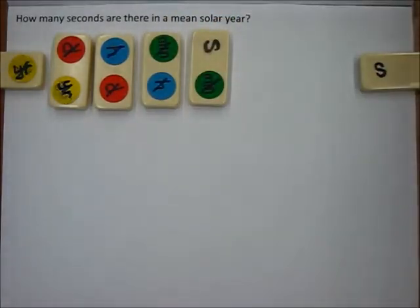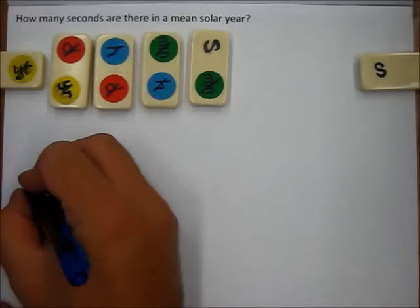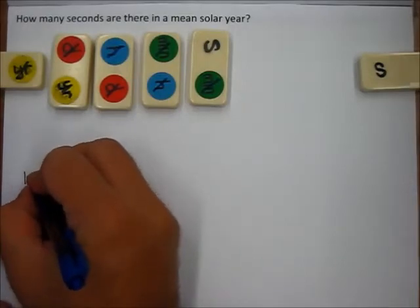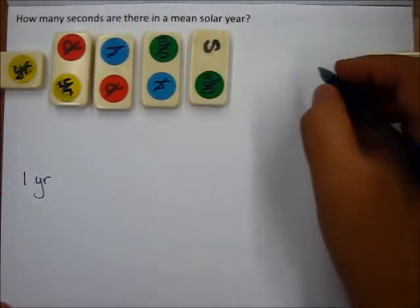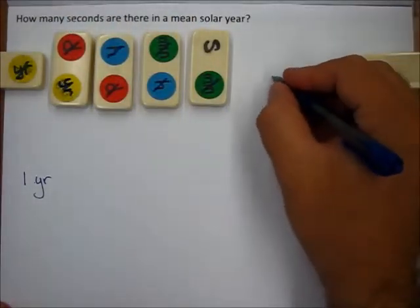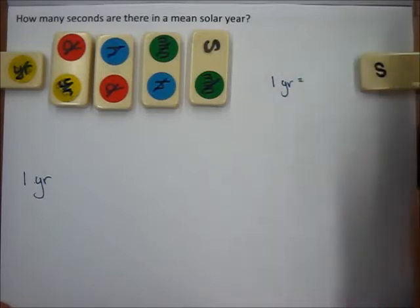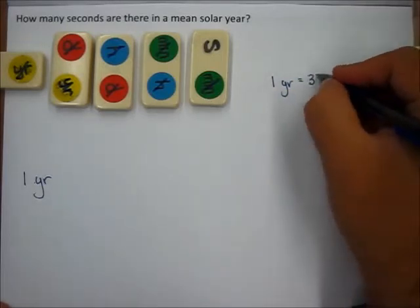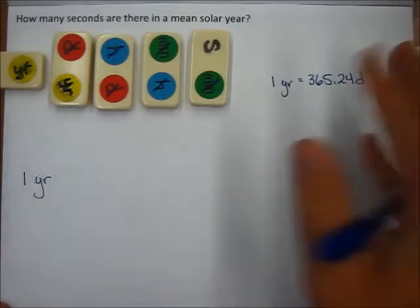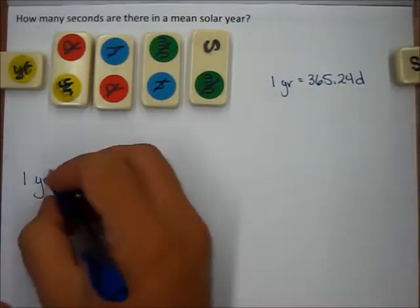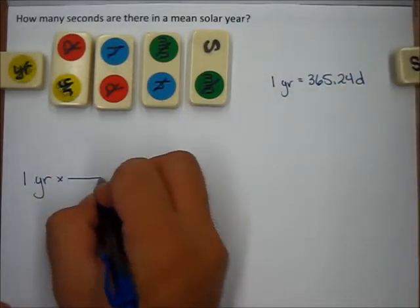Now let me write this out in dimensional analysis. The notation we're going to be asking you to do is I would start by writing down the unit I'm starting with, which is one year. Now the unit conversion for a year to a day is one year equals 365.24 days—that's what you would look up.